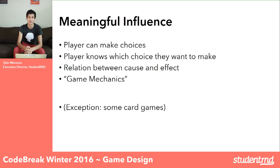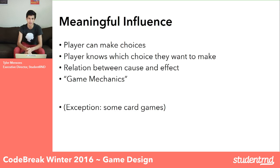The player sees a choice they can make, and eventually — maybe not initially, maybe there's a learning curve — they are able to figure out what choice they want to make. And then there is some relation between that choice and something that happens in the game. The choices that players make are generally tied in with what you would call game mechanics. There are some exceptions — certain card games that are entirely random, like a lot of casino games, where there is absolutely no choice the player is making other than to play.